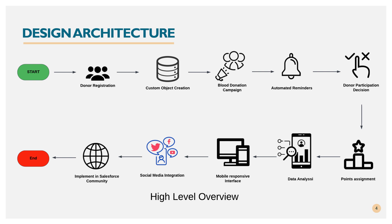Select an Auto-Launched Flow and design the flow by adding a decision element to evaluate conditions each time the flow is launched. Set up email alerts by adding an email element within the flow to send personalized reminders to donors. Then update the points field in the donor object to add 10 points whenever the flow is triggered.